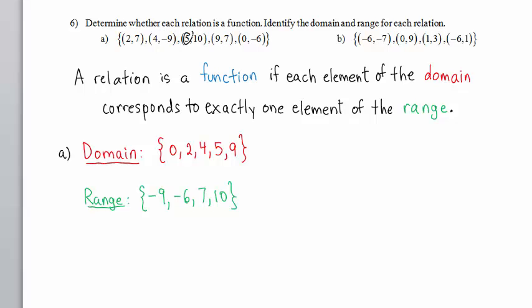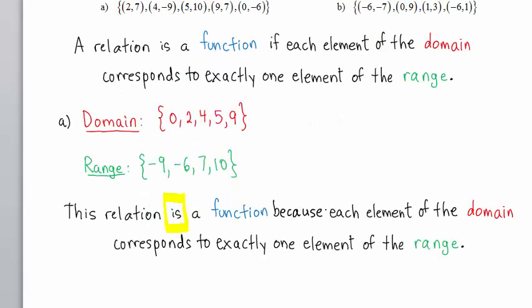Likewise, with 5, it corresponds to 10 and no other number. 9 in the domain corresponds to 7 and no other number. And 0 in the domain corresponds to negative 6 and not to any other number. Thus, our conclusion is, this relation is a function because each element of the domain corresponds to exactly one element of the range.